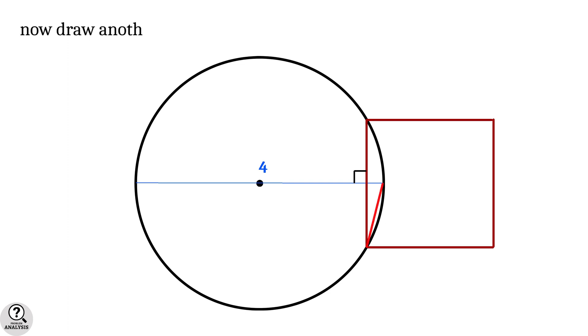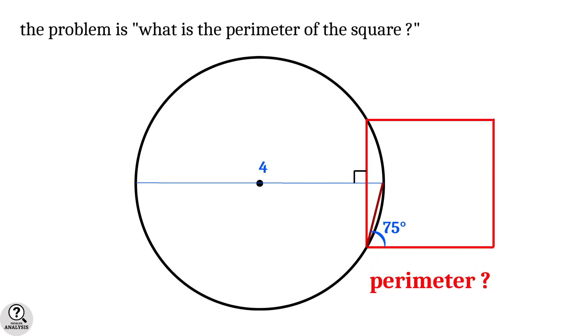Now, draw this line segment that connects one end of the chord and the nearer end of the diameter. Suppose the angle of this line segment with respect to the base line of the square is 75 degrees. Then my problem is, what is the perimeter of this square?